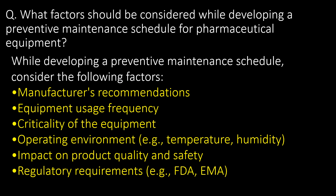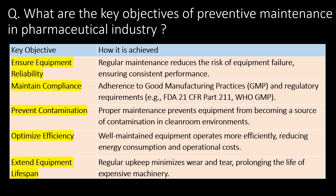A very important question: what factors should be considered while developing a preventive maintenance schedule for pharmaceutical equipment? Consider the following: first, manufacturer's recommendations; second, equipment usage frequency; third, criticality of the equipment; fourth, operating environment (e.g., temperature or humidity); fifth, impact on product quality and safety; and sixth, regulatory requirements like EMA and FDA.